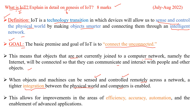This allows for improvements in the areas of efficiency, accuracy, automation, and the enablement of advanced applications. This much you can write for what is IoT, which carries two marks.